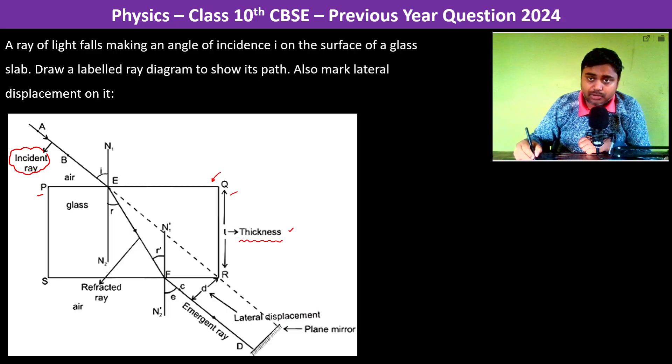You see it is deviating from its original path, deviating towards the normal. So we have to draw the normal here, we have to draw the incident ray, step by step, and then we have to draw the refracted ray.